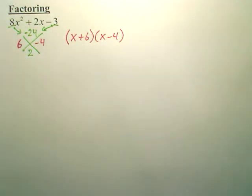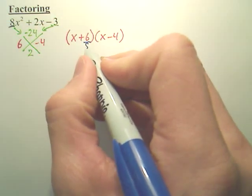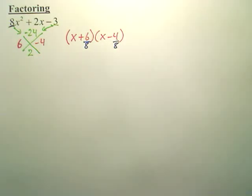But here's the trick. This little 8, because I had to multiply the 8 by the negative 3 to get the top, I have to then go and divide both of these by 8.